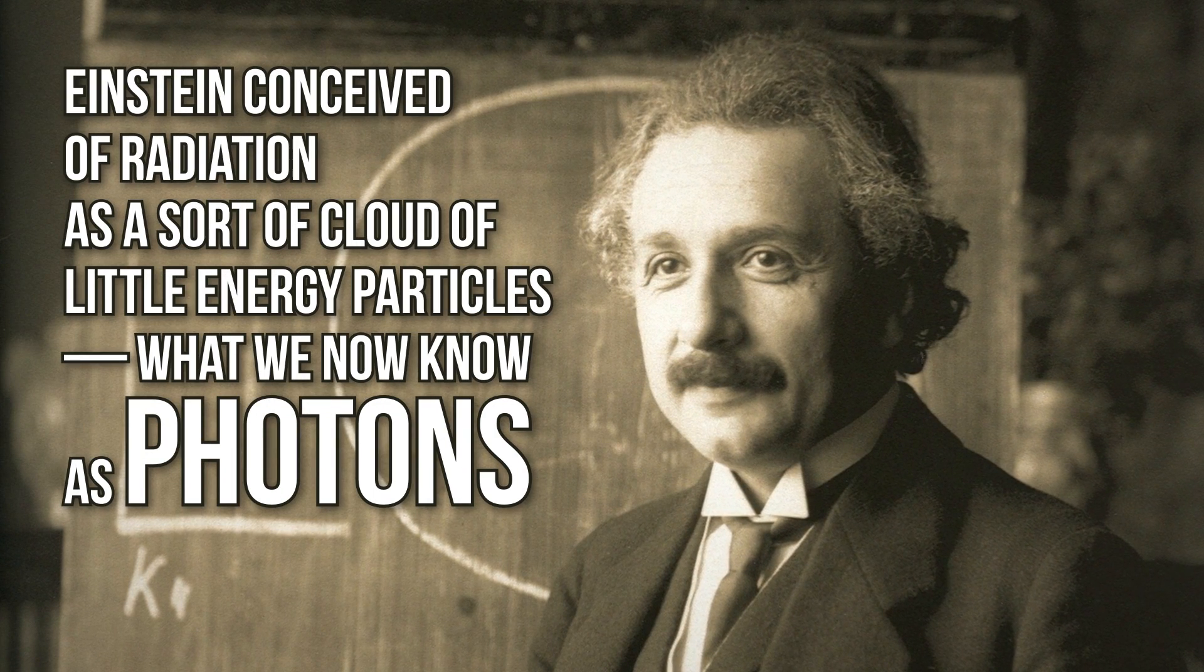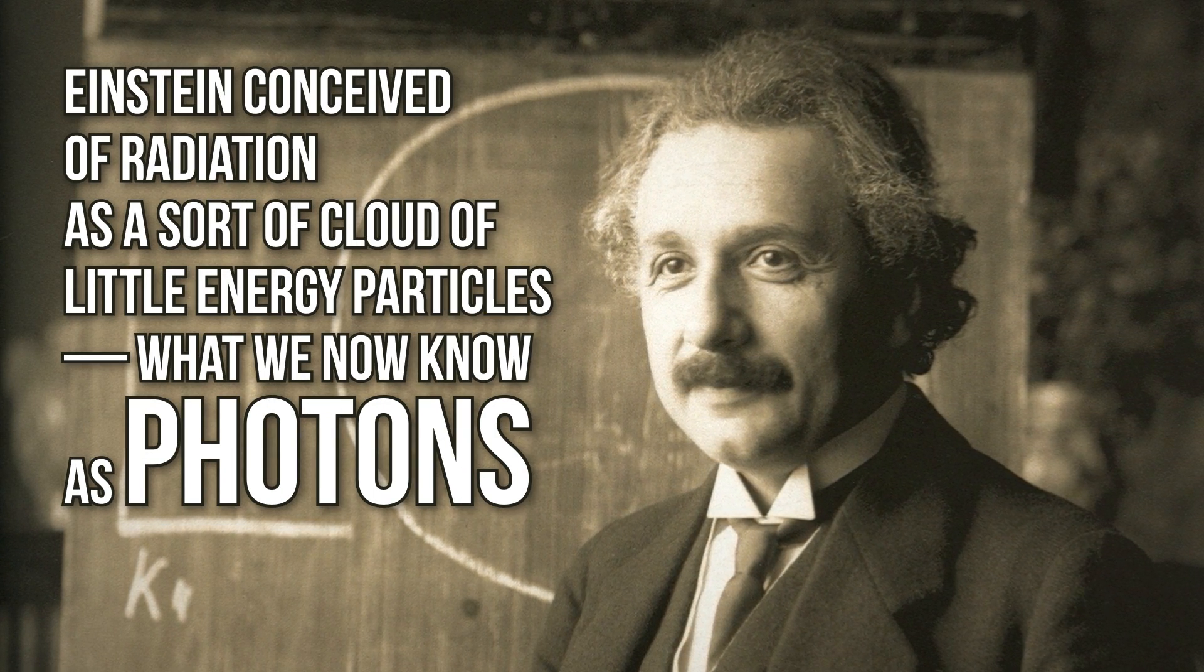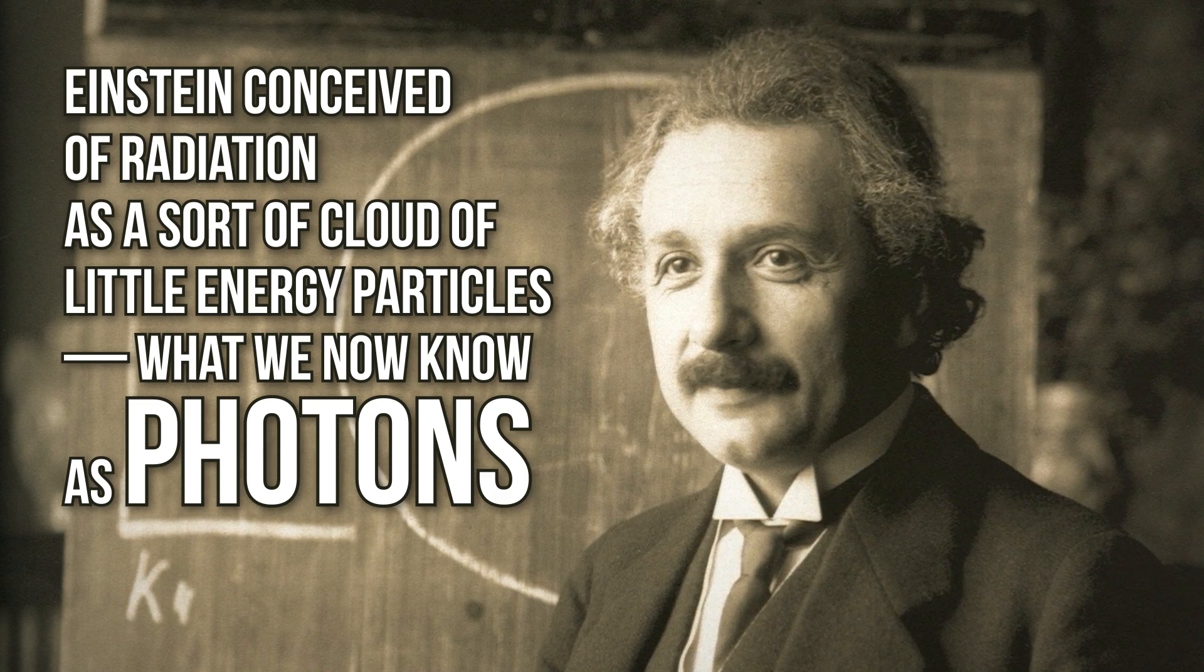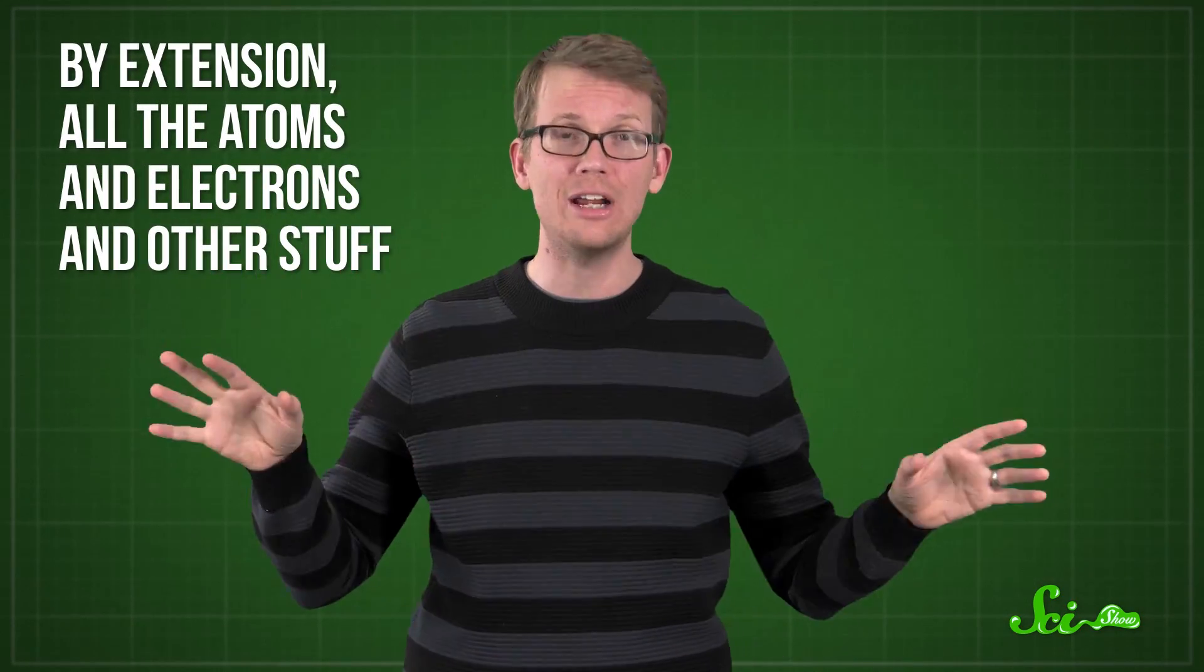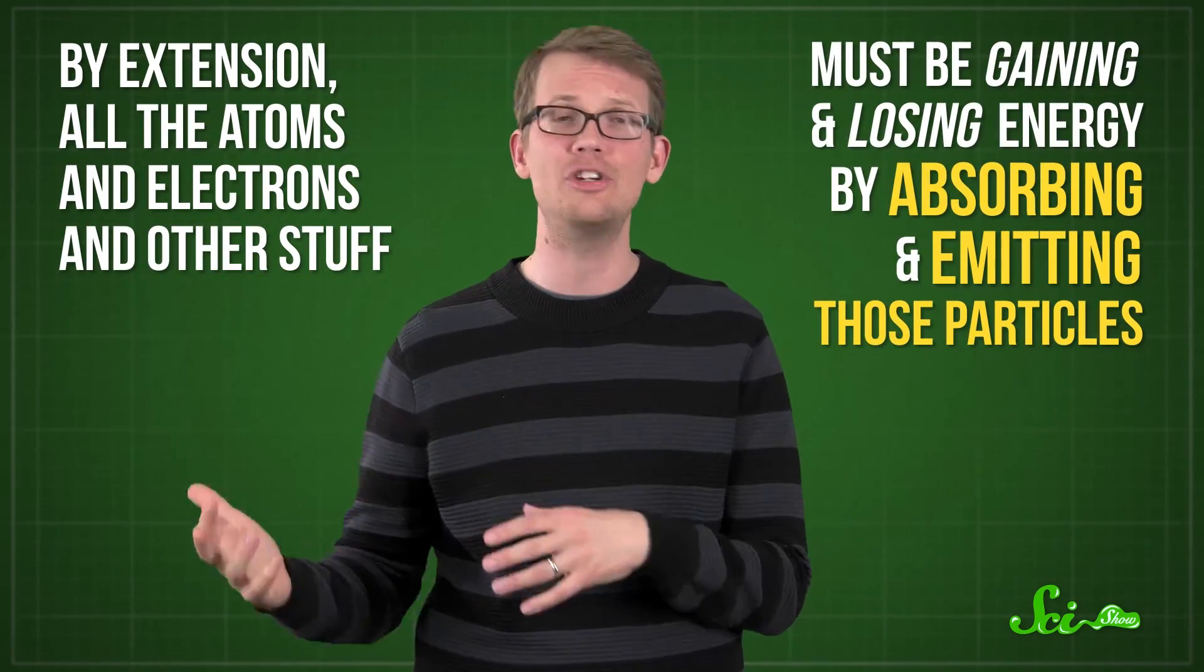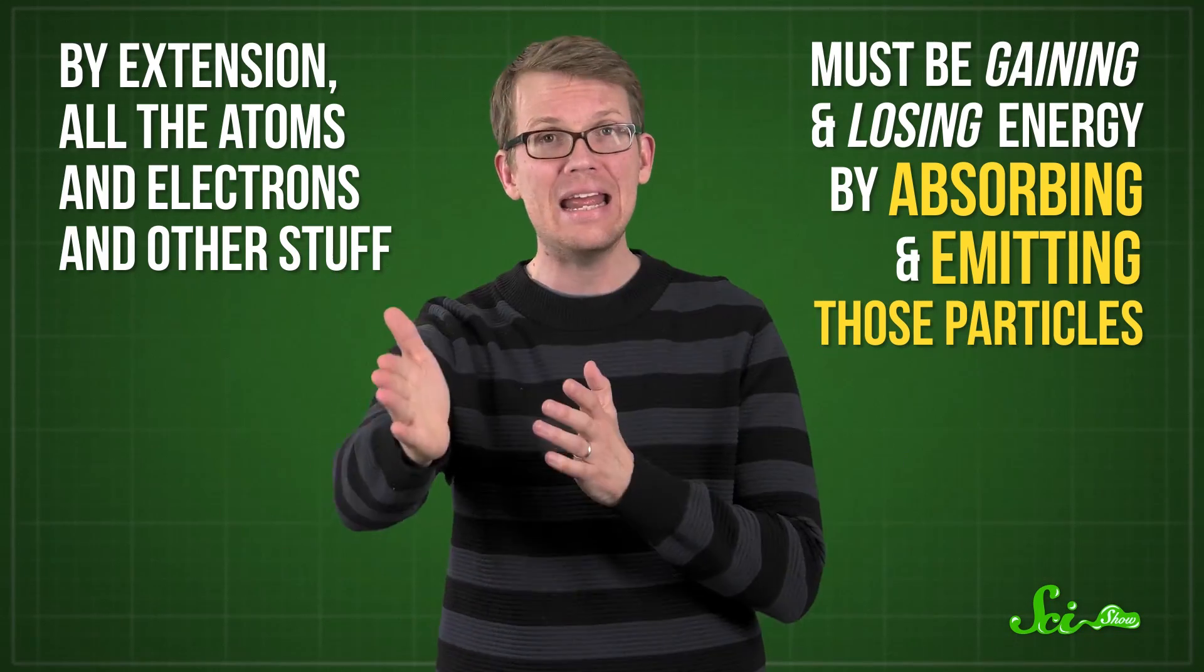It wasn't until Einstein took another look a few years later that he realized energy really did come in packets. Einstein conceived of radiation as a sort of cloud of little energy particles, what we now know as photons. And you might be thinking, Einstein wasn't German. You said they were all German. He was born in Germany. By extension, all the atoms and electrons and other stuff must be gaining and losing energy by absorbing and emitting those particles. And all of quantum mechanics unfolded from there.